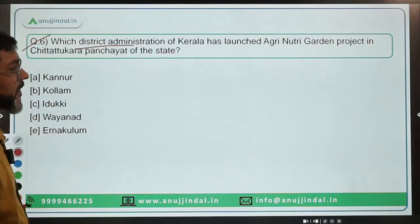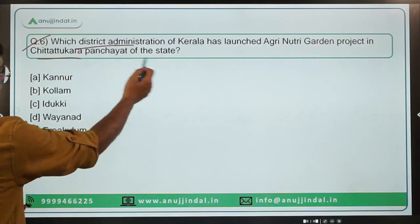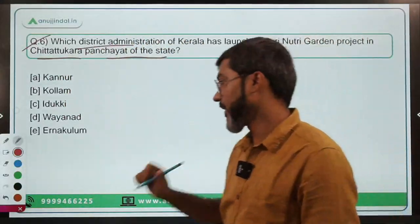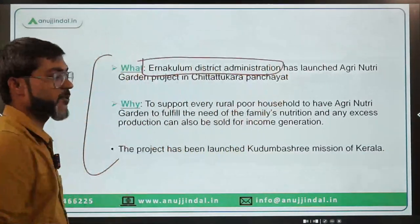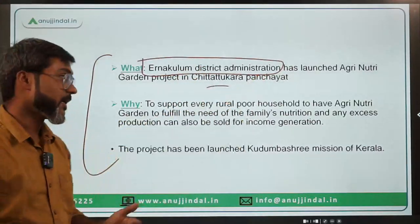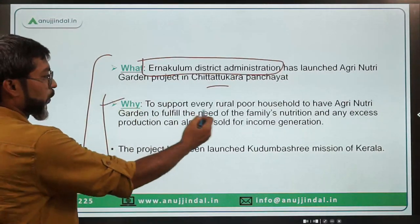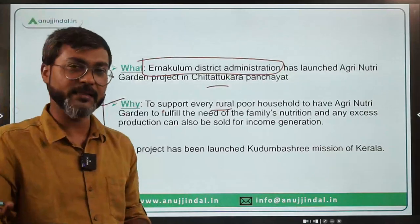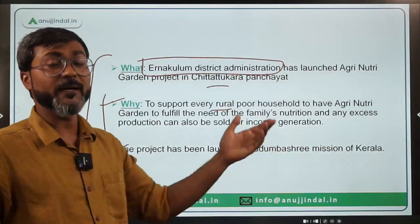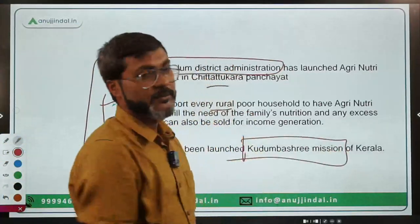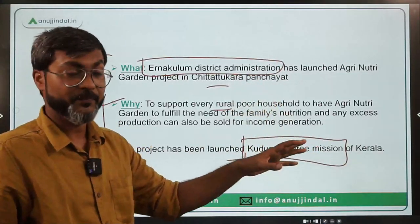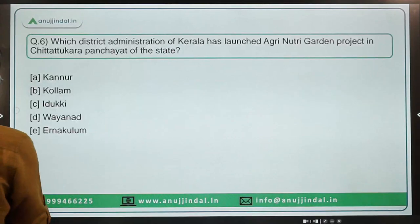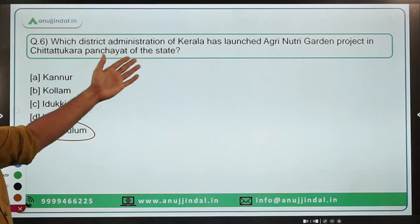Question six: Which district administration of Kerala has launched a Green New Tree Garden project in Chittattukara Panchayat of the state? The question is essentially asking in which district Chittattukara Panchayat is located. It is Ernakulam — the Ernakulam district administration has launched this project to support every rural poor household to have a kitchen garden for personal use, with surplus available for sale. This project has been launched under the Kudumbashree Mission of the Kerala government. The correct answer is Option E — Ernakulam.